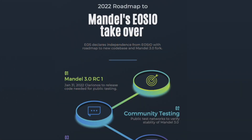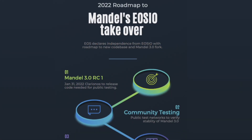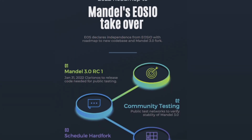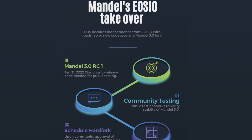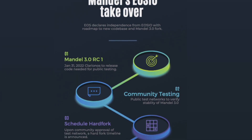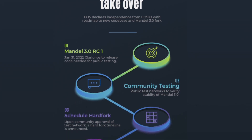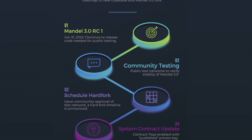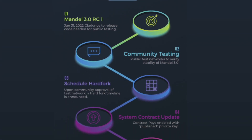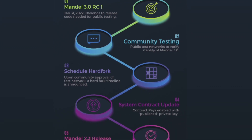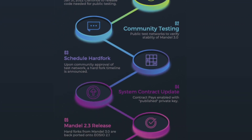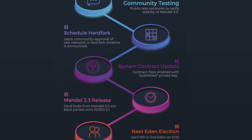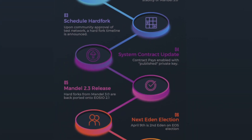The next step on the roadmap is community testing. Most of the features of Mandel have already been tested as part of EOSIO 2.1, and the new features, such as get contract hash, are relatively simple. This means that the community testing phase should be quick.